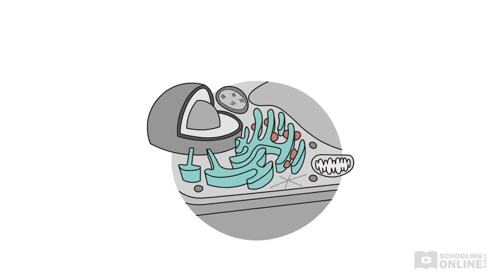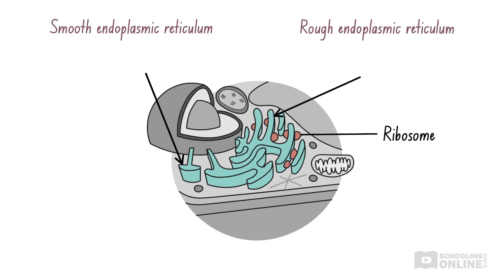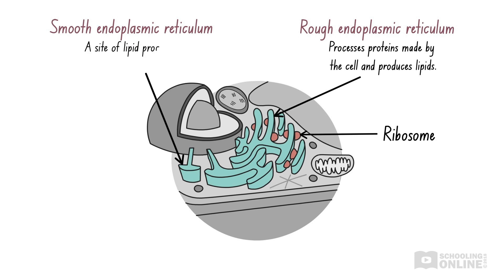The endoplasmic reticulum can be rough or smooth, depending on the presence of ribosomes. Remember, ribosomes perform protein synthesis. The rough endoplasmic reticulum has ribosomes attached to its surface and processes proteins made by the cell and produces lipids. Meanwhile, the smooth endoplasmic reticulum has no ribosomes attached to its surface and is a site of lipid production and membrane production and repair.